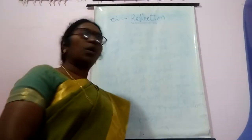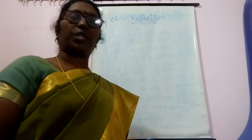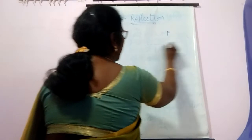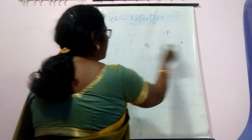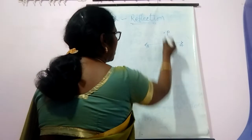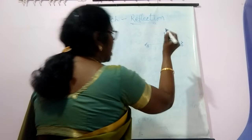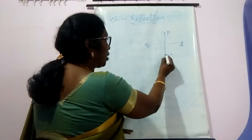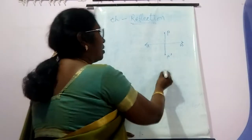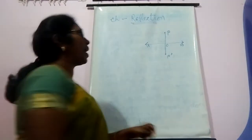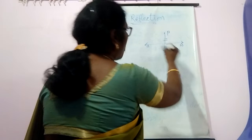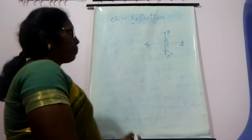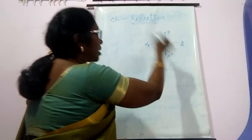Today I am going to explain you about chapter reflection. What is reflection? When a point P reflects through a line AB, the image is P' such that the distance of P from the line AB is equal to the distance of P' from the line AB. If O is the point of intersection of AB and PP', then OP is equal to OP', and also PP' is perpendicular to AB. That means AB is the perpendicular bisector of PP'.